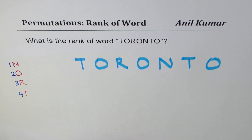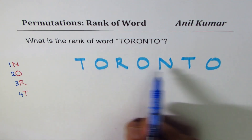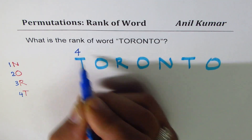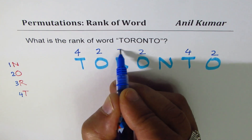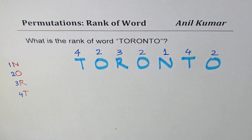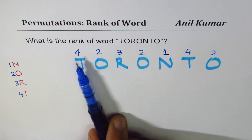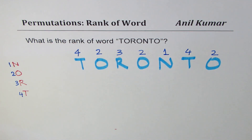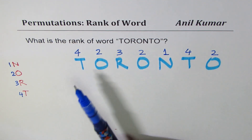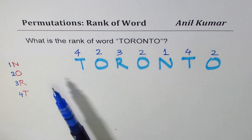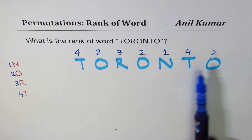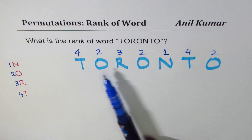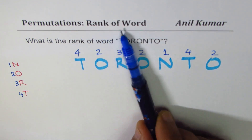In our shortcut method, we write these numbers correspondingly on each letter. So T gets 4 for all T's, O gets 2 for all O's, R gets 3, and N gets 1 — that is their alphabetical priority. The rank of a word means finding all combinations of words using these letters and arranging them in alphabetical order to find where Toronto appears.